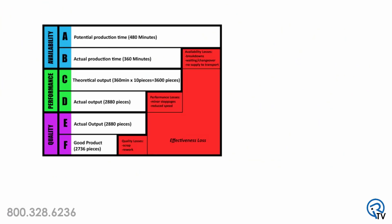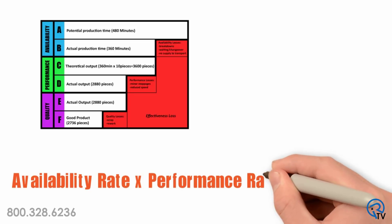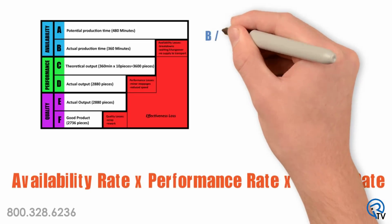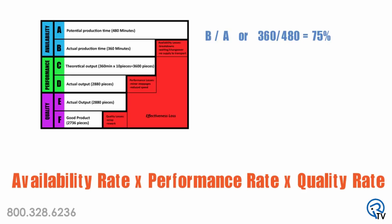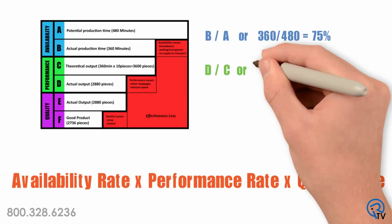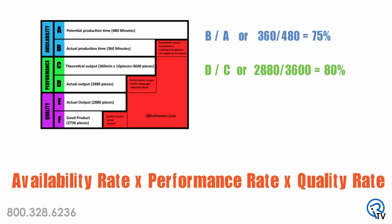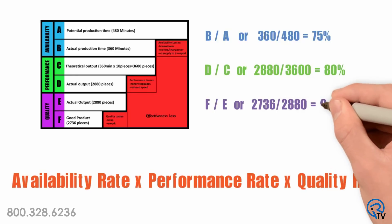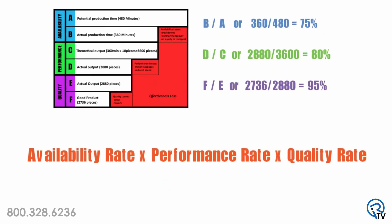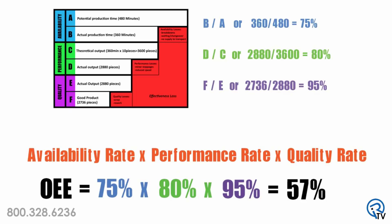When we line up the answers to the three questions, the total OEE calculation looks like this. OEE is calculated by multiplying the availability rate by the performance rate by the quality rate. Availability rate is B divided by A, or 360 minutes divided by 480 minutes, which equals 75%. Performance rate is D divided by C, or 2,880 pieces divided by 3,600, which equals 80%. Quality rate is F divided by E, or 2,736 units divided by 2,880 units, which equals 95%. So the OEE is 75% times 80% times 95%, which gives us 57%.